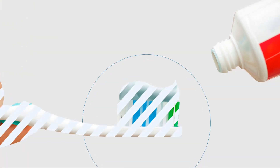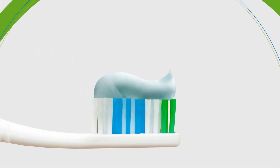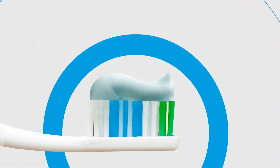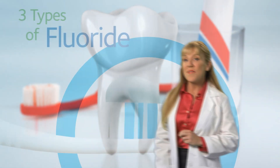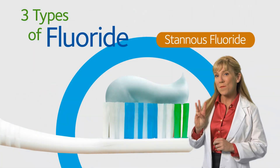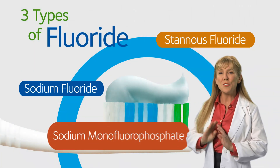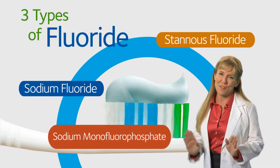The most important active ingredient in your toothpaste is fluoride. All toothpaste with the ADA seal contains fluoride to strengthen tooth enamel and fight decay. There are three types of fluoride commonly used, and they're all effective.